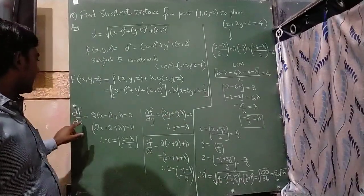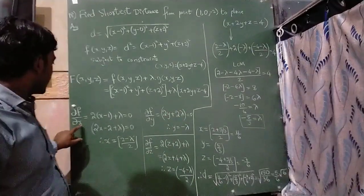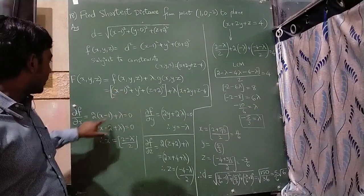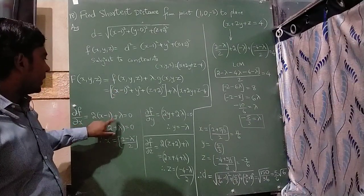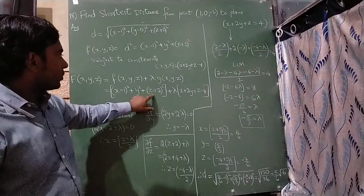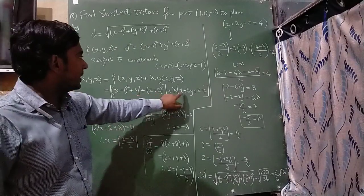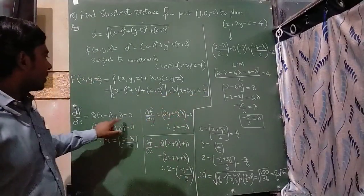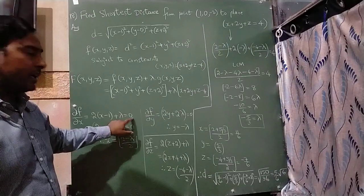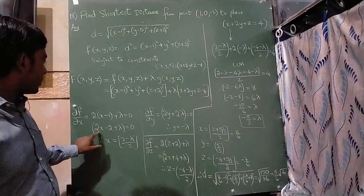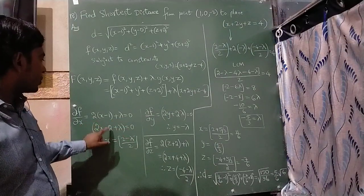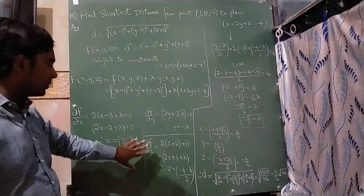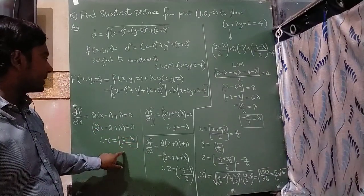Differentiating with respect to x: (x - 1)² becomes 2(x - 1), all other terms become 0, and the constraint term gives λ. Equating to 0: 2x - 2 + λ = 0, so x = (2 - λ) / 2.